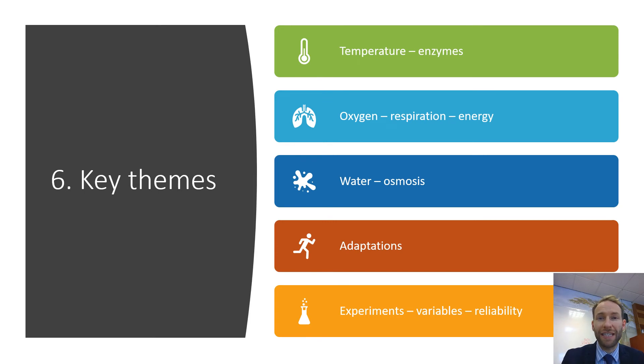There are loads of key different themes that come up in biology. These are just a couple of things that I've kind of noticed that I think is important to really bear in mind. Temperature comes up a lot. But when we really talk about temperature in biology, really what we're talking about is enzymes and it's making that link. If you make that link between temperature and enzymes, then you're bound to get a good few marks there. Again, oxygen comes up.